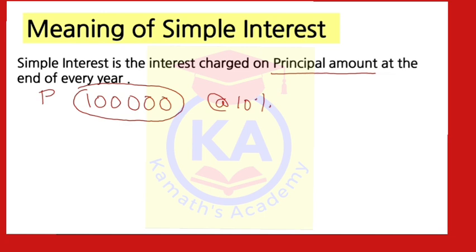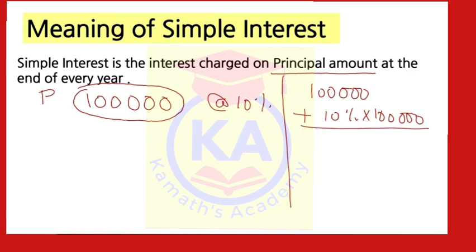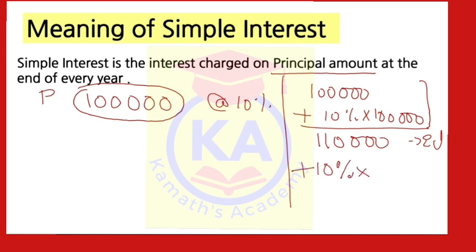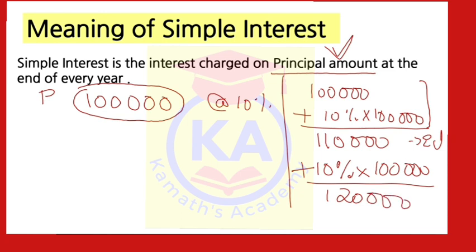At 10% interest, so for the first year, by the end of first year: 1 lakh rupees plus interest 10% on 1 lakh rupees — that is 10,000 — so that is 1 lakh 10,000. This is at the end of first year, you'll get the amount. Now for the second year, add 10% on what amount? 1 lakh only, because interest is charged on principal amount. So again 10% into 1 lakh — that is 20,000 at end of second year. Like this it will move, so interest is charged on principal amount.